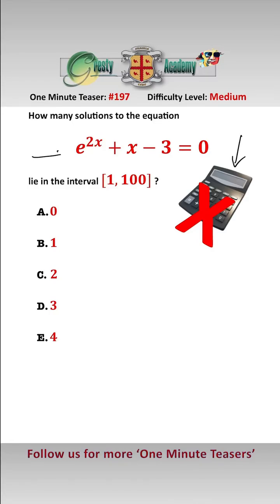Without a calculator, by far the easiest way to solve this is to do it graphically after we have rewritten it as e to the 2x equals 3 minus x, both of which are relatively easy to draw.